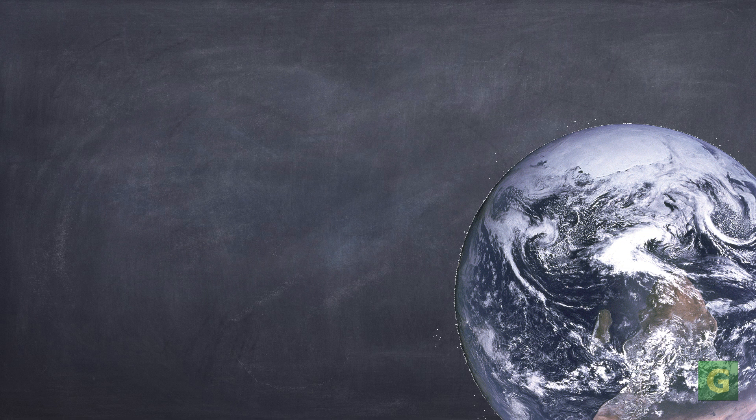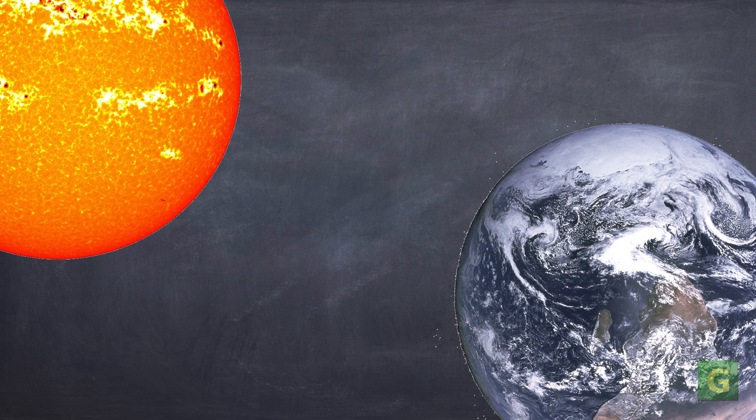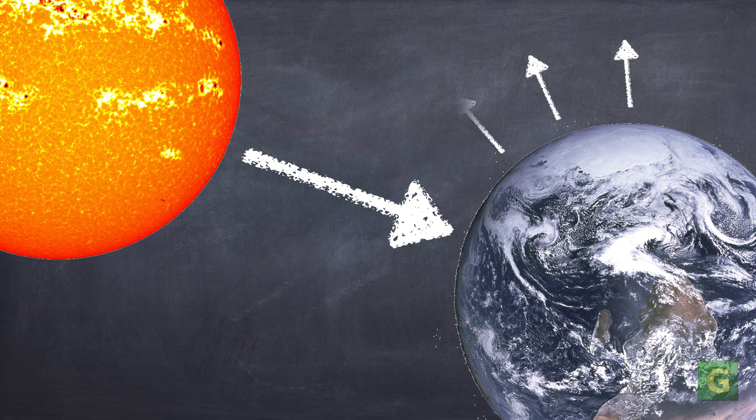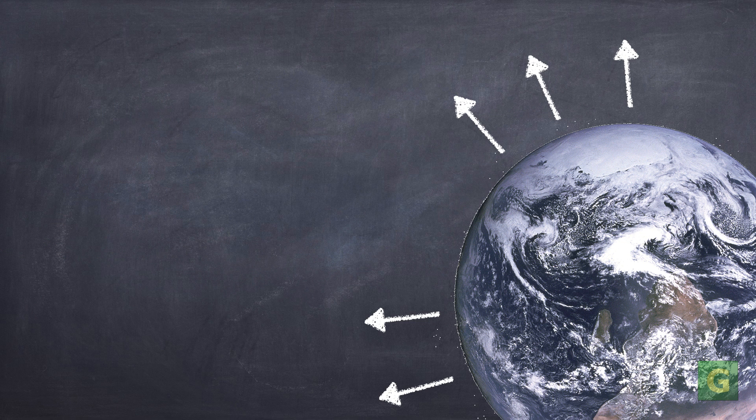How warm or cold our planet is depends mainly on the balance between the energy that it gets from the Sun and the energy that it loses to space. The greenhouse effect is a very important part of this energy balance.